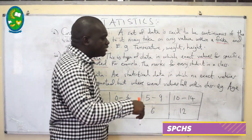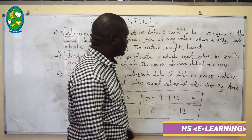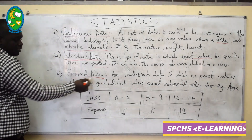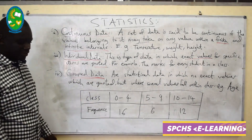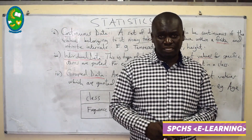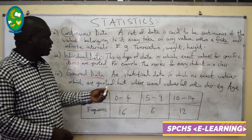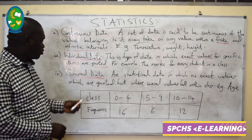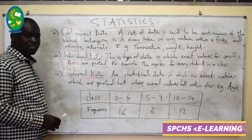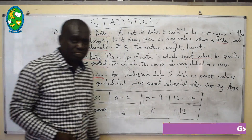For example, the mark of every student in a class is individual data — it touches every student. Another type of data is grouped data. Grouped data is the type of data which has certain intervals. It is statistical data in which no exact value is caught — it is just a vice versa of individual data. This is the data which lies in a certain class, that's why sometimes we call it a class interval.